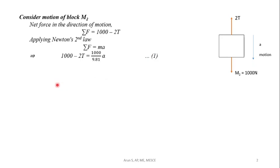Now we will consider motion of block M1. In the direction of motion, tension T acts at the point where the cable is attached.